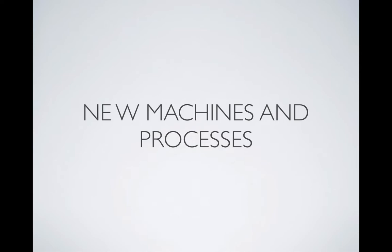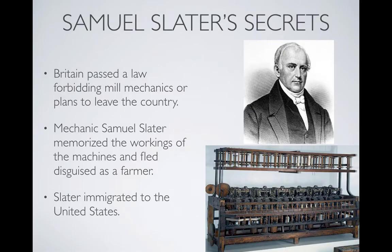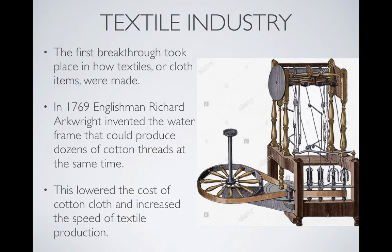The next thing we're going to talk about is the new machines and processes that helped bring the Industrial Revolution to the United States. Great Britain knew the water frame was very valuable and passed laws making it illegal for anyone in the textile industry to immigrate elsewhere, or for any plans of these spinning machines to be taken out of the country. However, a mechanic named Samuel Slater realized he could become very rich if he could get out. He disguised himself as a farmer, made up a different identity, boarded a ship, and immigrated to the United States, bringing with him the secrets of Richard Arkwright's water frame spinning device.